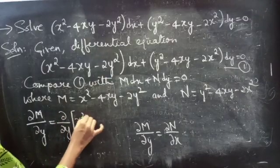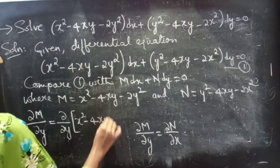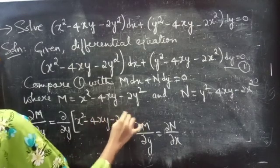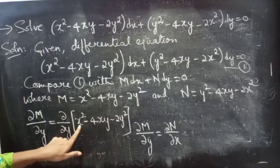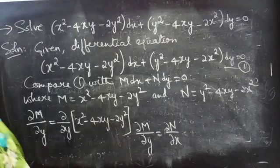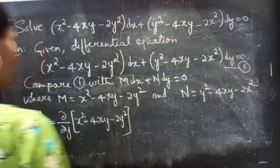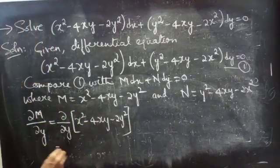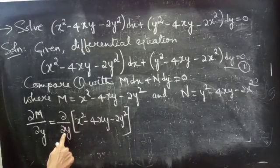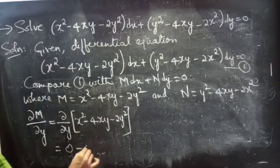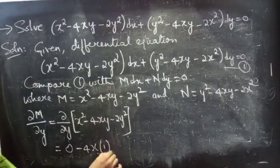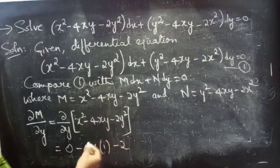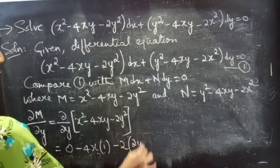Here we are differentiating M with respect to y, so we will treat x as constant. This equals to 0 minus 4x times 1 minus 2 times 2y, which gives us minus 4x minus 4y.